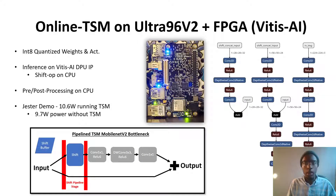To deploy online TSM to FPGA, we utilize Xilinx Vitis AI to quantize all weights and activations from float32 to int8, as well as quantize all convolution operations for running on the DPU IP block. All shift operations, however, are run on the CPU. To split computation between the CPU and DPU, we pipeline our models such that the shift operations are isolated.